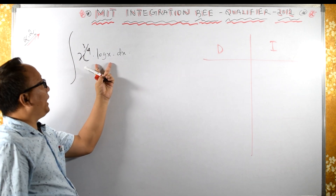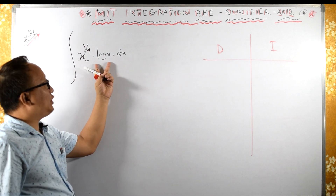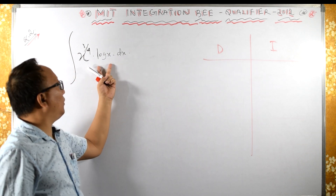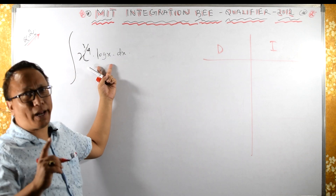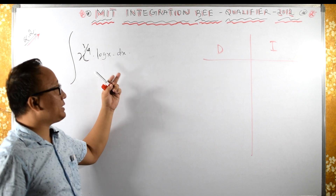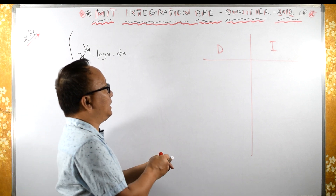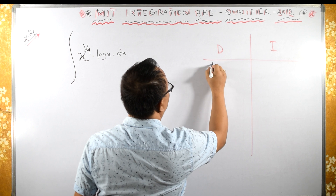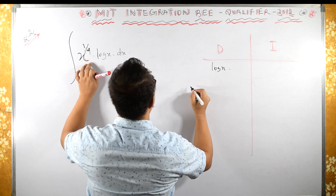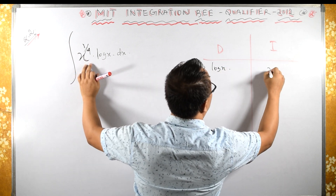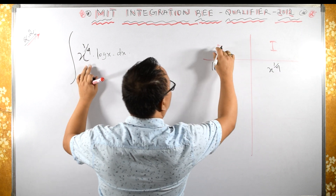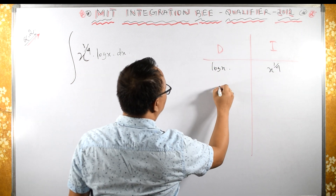If I choose log x in the integration by parts, in order to integrate log x I would have to choose 1 times log x, which would be lengthy. Therefore I will place log x in the differentiation column, and x raised to 1/4 in the integration column.